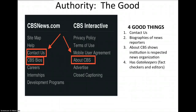Here's an example of a website with very good authority: cbsnews.com. There are four things I like about cbsnews.com. First, they have a link to contact them so you can point out mistakes or ask questions. The biographies of their news reporters make it clear that these people are experts in their field. The About CBS link shows that this is a respected news organization with a reputation that goes back many decades. And since this is a professional news site, it has gatekeepers — fact-checkers and editors who could discover and correct mistakes. So cbsnews.com has good authority.